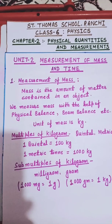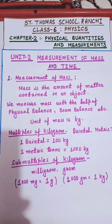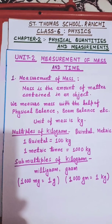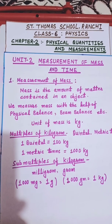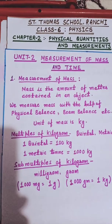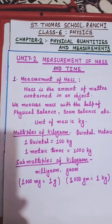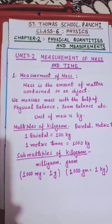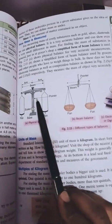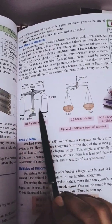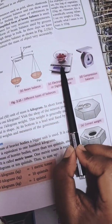The first question is: what do you mean by mass? Mass is the amount of matter contained in an object. We measure mass with the help of a physical balance, beam balance, electronics balance, or compressed balance. I want to show you a few diagrams from the book.